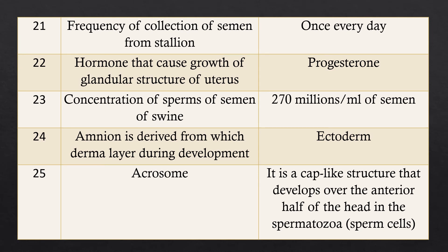Question 21: Frequency of collection of semen from a stallion. One can collect semen from a stallion once every day, not more than that. In a bull, one can collect twice or thrice per week. If the collection is more than this, there is poor quality of the semen.